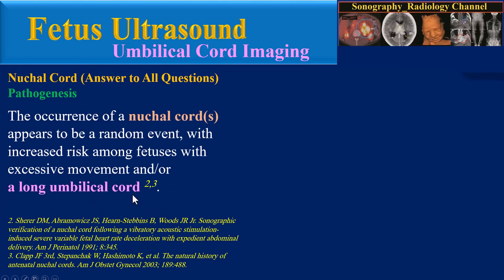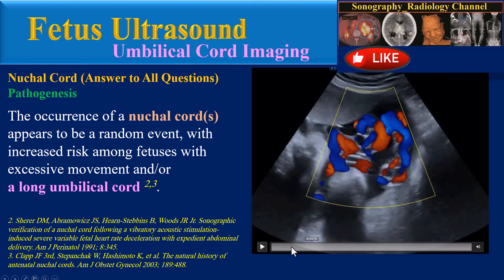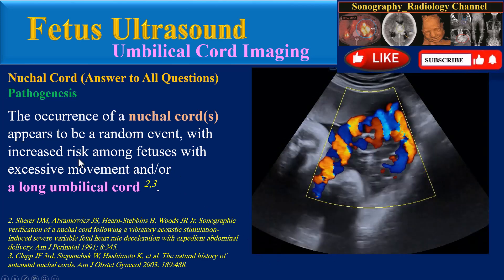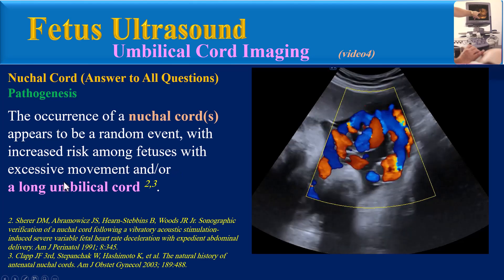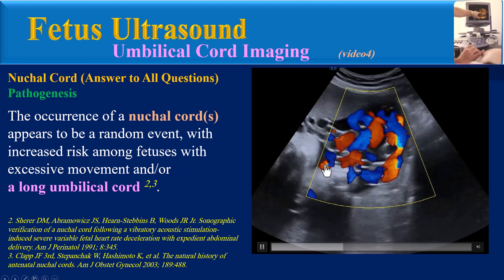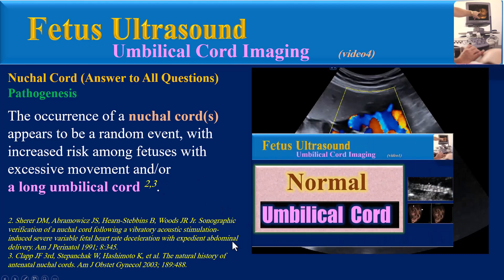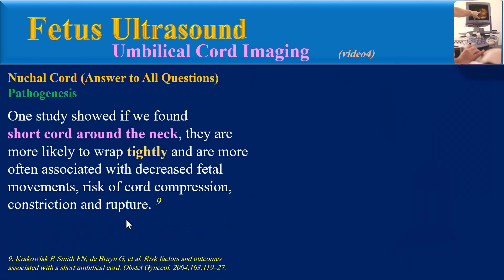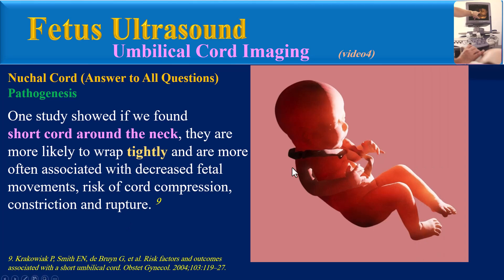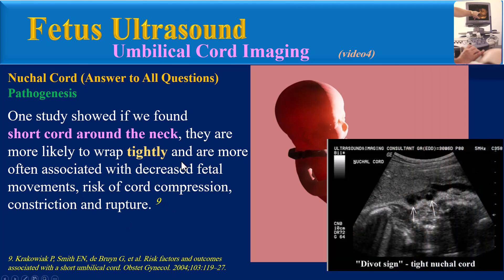Pathogenesis: The occurrence of nuchal cords appears to be a random event, with increased risk among fetuses with excessive movement and/or a long umbilical cord. One study showed that short cords around the neck are more likely to wrap tightly and are more often associated with decreased fetal movements, risk of cord compression, constriction, and rupture.